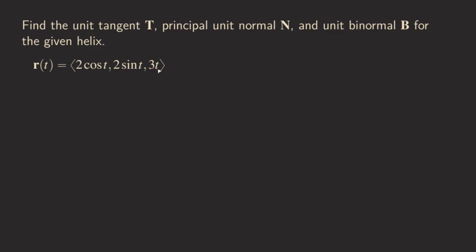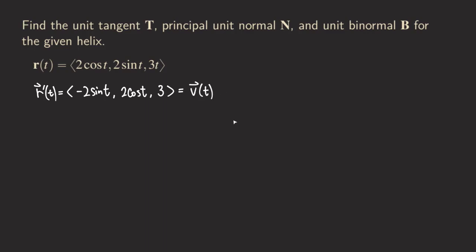First we take the derivative of this function. So we get r prime of t. Taking the derivative, we get negative 2 sine of t, and then 2 cosine of t, and then taking the derivative of 3t we just get 3. So that's r prime. If we think of this as the motion of an object along the helix, we can also consider this as the velocity function for this object.